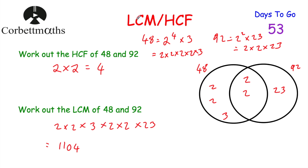So to find the lowest common multiple or highest common factor of two numbers: write them as a product of primes, draw a Venn diagram, put shared factors in the middle and extras on each side. Multiply the numbers in the middle for the highest common factor. Multiply all numbers together for the lowest common multiple. Now can you find the highest common factor and lowest common multiple of 36 and 60?